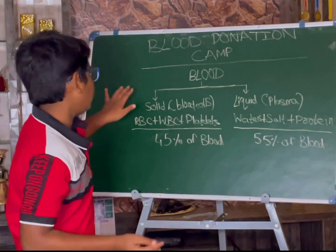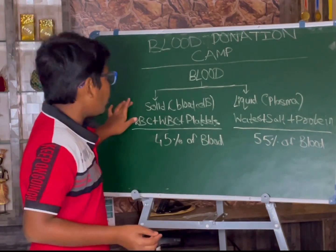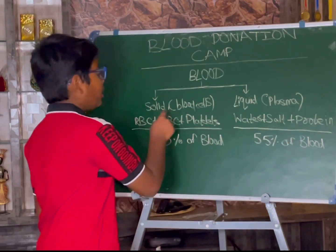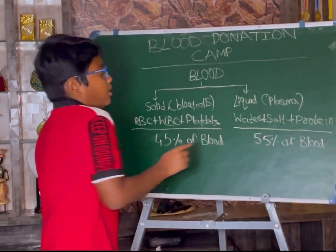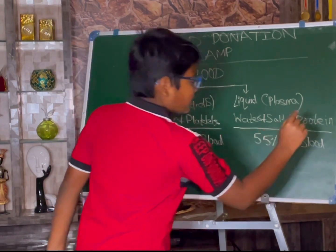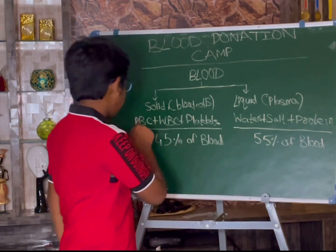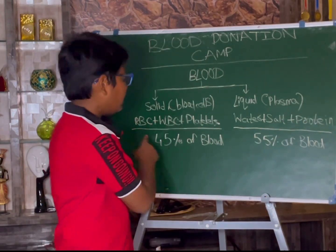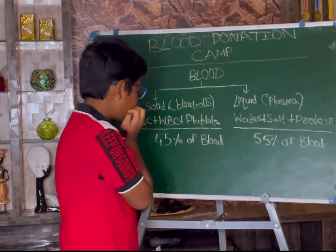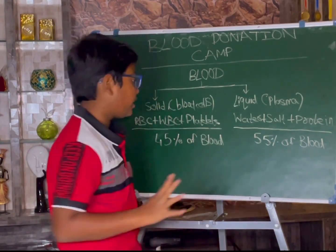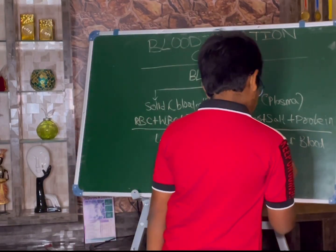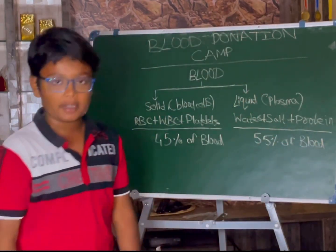What is blood? Blood consists of a solid part and a liquid part. The liquid part is plasma and the solid part is blood cells. The liquid part consists of water, salt, and protein. The solid part has RBC, WBC, and platelets. The solid part consists of 45% of our blood and the liquid part consists of 55% of our blood.